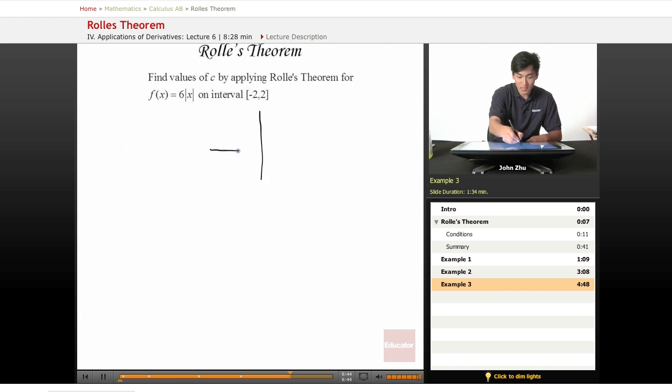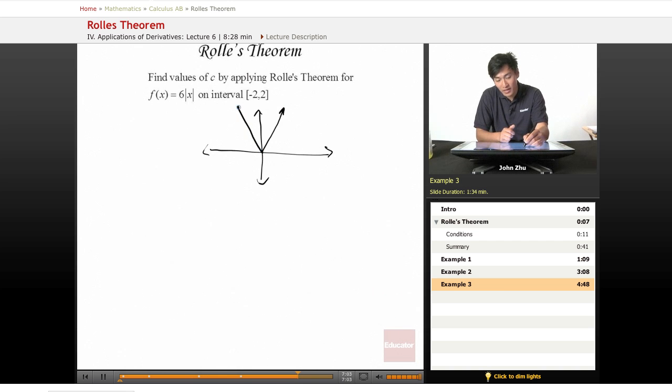Well, 6 times the absolute value of x. We know that 6x is just a very highly sloped straight line. But absolute value of x will flip everything on the left side, the negative x axis, into a positive value. So the graph looks something like this.